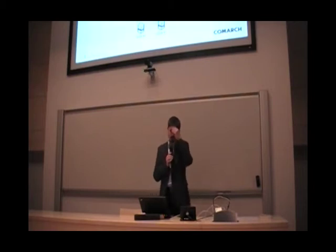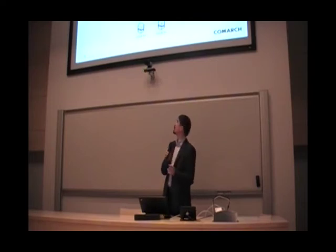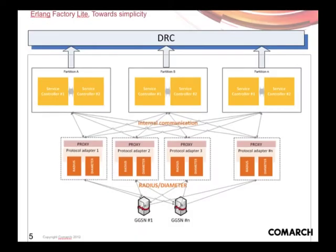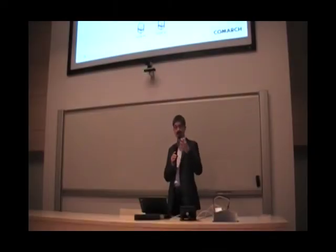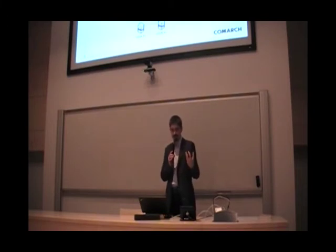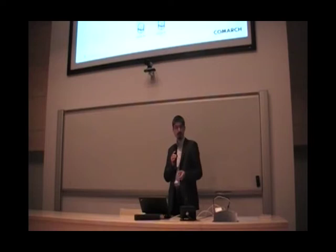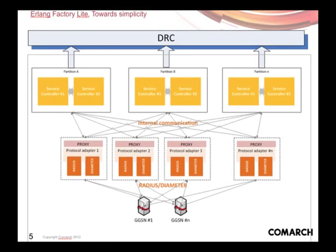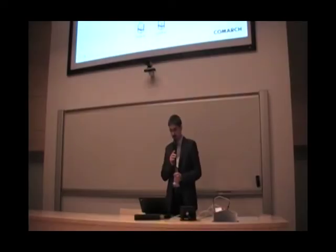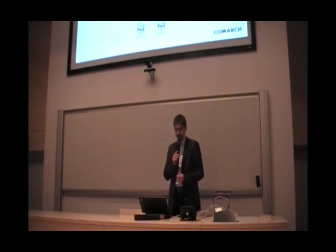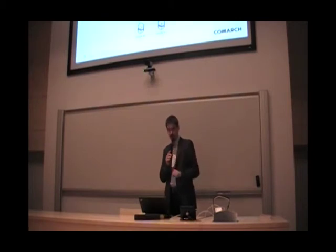We have two kinds of boxes. The first one is called network adapter and the second one is called service controller. The network adapter takes requests from the GGSN — usually used via a header — and its role is to translate the protocol from the network to our internal protocol, and also to do some enrichment of the data. After that, the network adapter sends the request to the proper service controller. From the GGSN perspective, the network adapter is stateless, so it doesn't matter to which component it addresses its request.